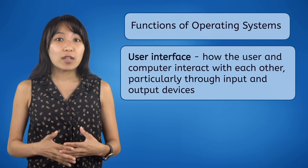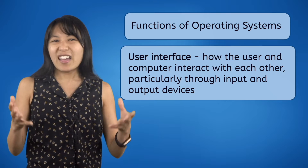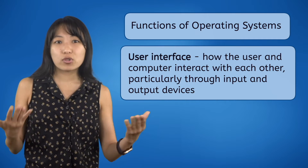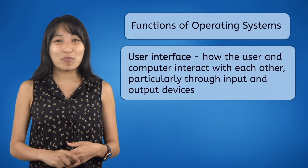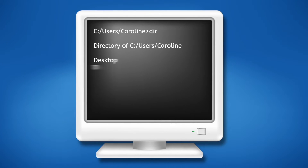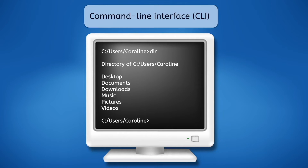The part of an operating system that users are most familiar with is the user interface — how the user and computer interact with each other, particularly through input and output devices. Older computers used a very simplified user interface known as a command-line interface, or CLI, that could only display text. The only way to operate a CLI is by typing commands into a command line, which means you have to know exactly what commands to type in.